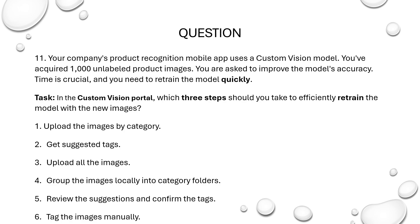Now let us break down the question. What are the keywords present in the question? The very first keyword is you have to retrain the model quickly — so quickly is a keyword; it should be done very fast. There is an already existing custom vision model and the model is used to identify your company's products.